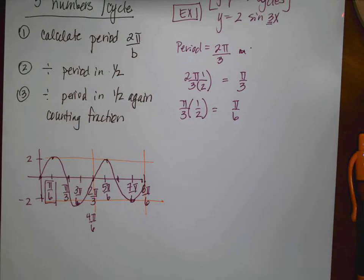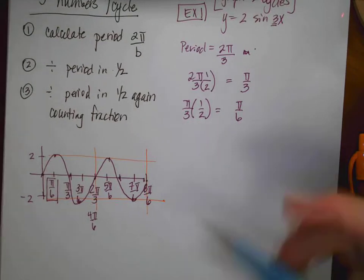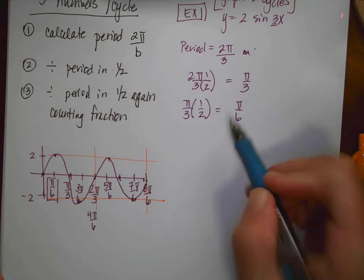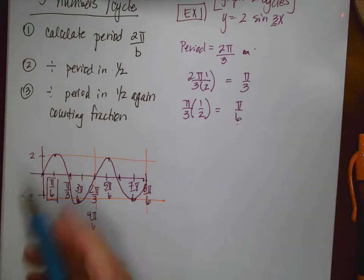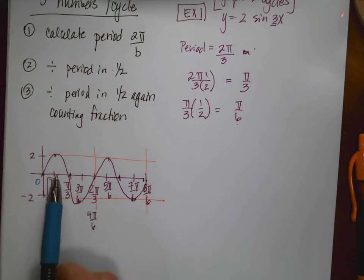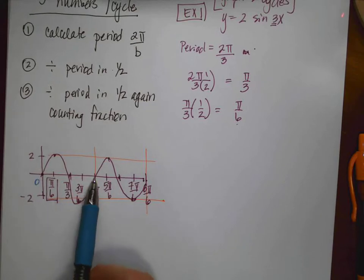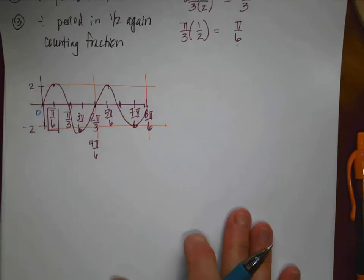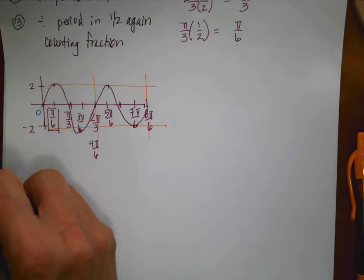That example was straightforward. The key is: always calculate your period first, plot the period, divide it in half, divide in half again, put your amplitude on the graph. Notice I plotted 1, 2, 3, 4, 5 points per period. The expectation is that you graph 5 points per period.